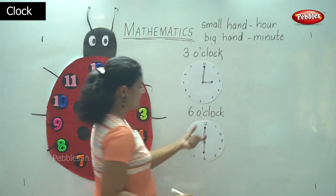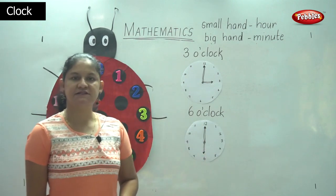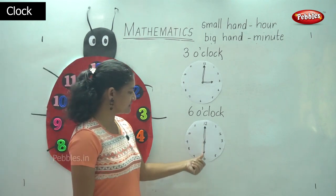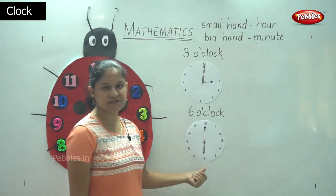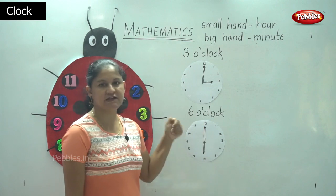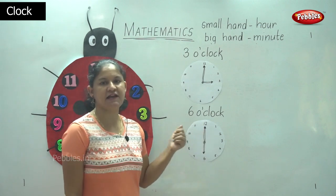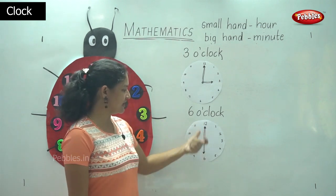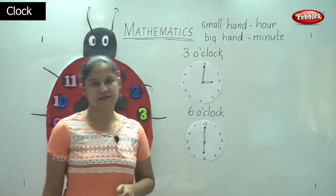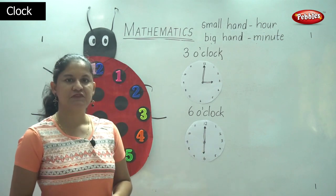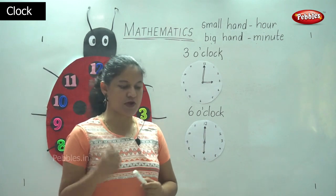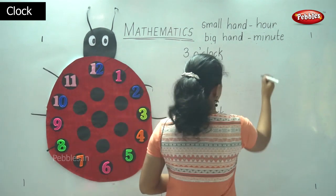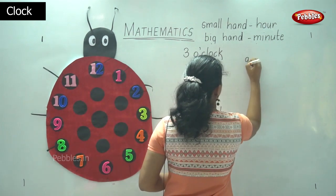So we read the time as 6 o'clock. The small hand faces towards number 6 and the big hand — the minute hand — faces towards number 12. Then we say the time is 6 o'clock. Shall we move on to another example? Now I am going to mark the timing for 9 o'clock.